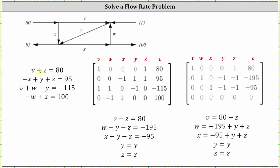For the first equation v plus z equals 80: coefficient of v is one, coefficients of w, x, and y are zero, coefficient of z is one, and the constant is 80. For the second equation negative x plus y plus z equals 95: coefficients of v and w are zero, coefficient of x is negative one, coefficients of y and z are both one, and the constant is 95. For the third equation: coefficients of v and w are both one, coefficient of x is zero, coefficient of y is negative one, coefficient of z is zero, and the constant is negative 115. For the final equation: coefficient of v is zero, coefficient of w is negative one, coefficient of x is one, coefficients of y and z are both zero, and the constant is 100.